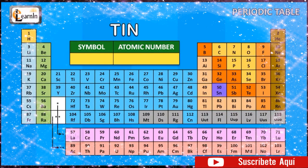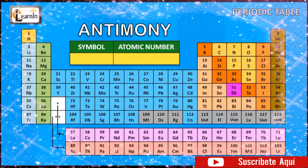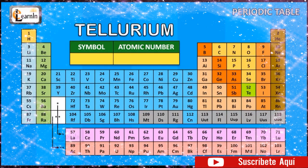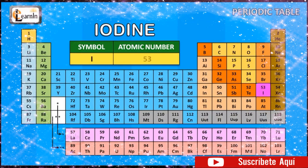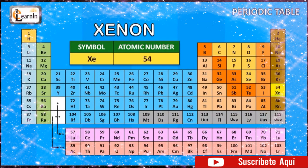The element antimony is represented as Sb and has an atomic number of 51. The element tellurium is represented as Te and has an atomic number of 52. The element iodine is represented as I and has an atomic number of 53. The element xenon is represented as Xe and has an atomic number of 54. The element cesium is represented as Cs and has an atomic number of 55.